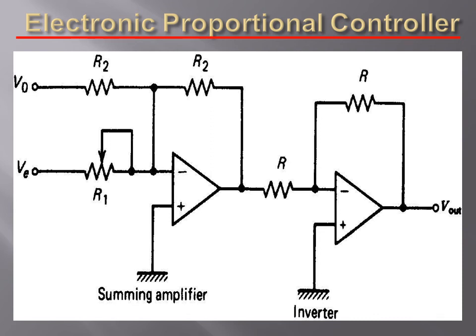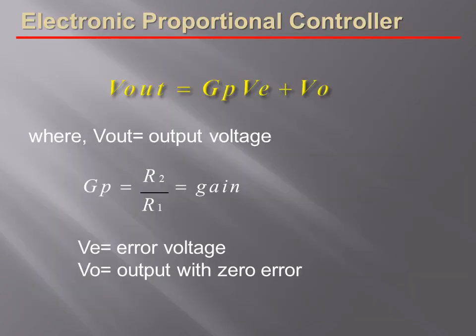The electronic version of the proportional controller is designed using the op-amp. It is a combination of a summing amplifier and an inverter. The output of the summing amplifier is connected to the inverter circuit as input. Input to the summing amplifier is the error voltage and output voltage is with zero error. The output voltage of the proportional controller is given by Vout is equal to Gp into Ve plus V0, where Gp equals R2 divided by R1 is the proportional gain, Ve is error voltage, and V0 is output with zero error.